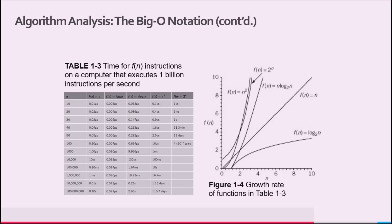Suppose a computer can execute 1 billion basic operations per second. Table 1-3 shows the time the computer takes to execute f(n) basic operations, where 1 microsecond equals 10⁻⁶ seconds and 1 millisecond equals 10⁻³ seconds. Figure 1-4 shows the growth rate of the functions from table 1-3.